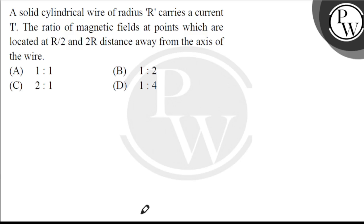Hello. The question says: a solid cylinder wire of radius R carries current I. Find the ratio of magnetic field at points located at r/2 and 2R distance away from the axis of the wire. Here we have a current-carrying solid cylindrical wire.